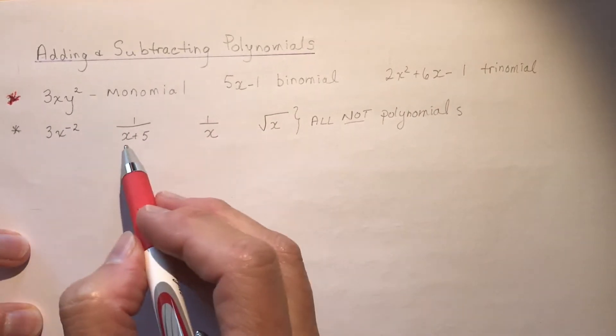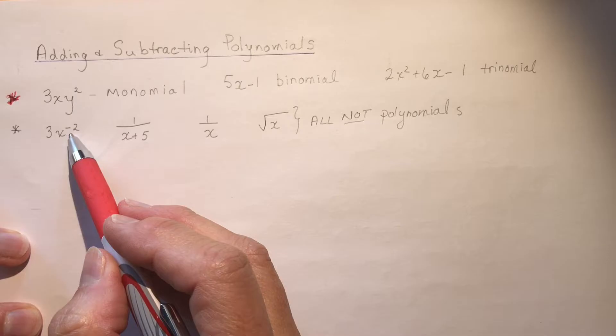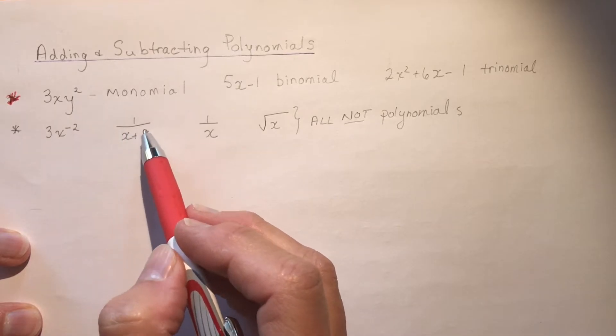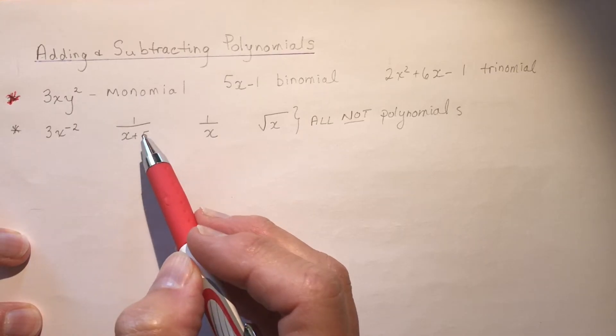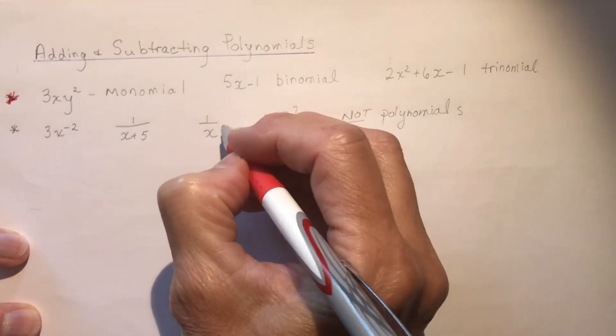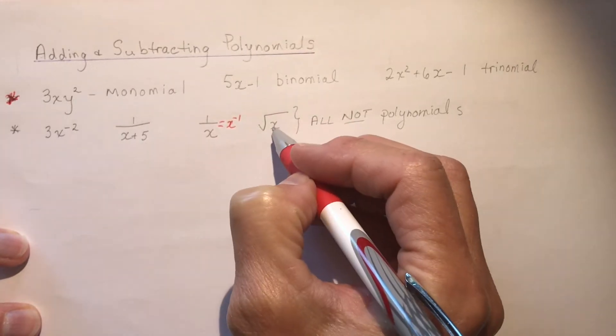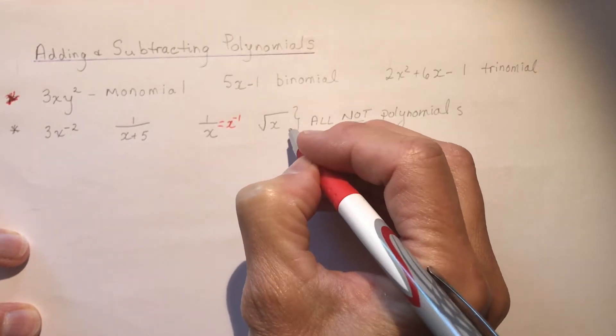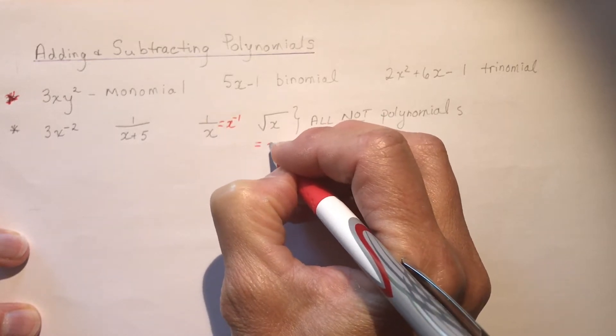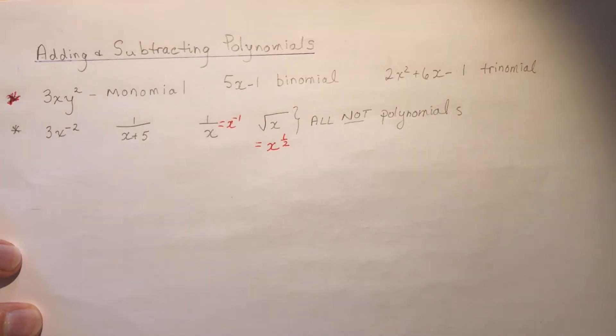Now these are examples that are not polynomials. When we have a negative exponent, if this is in the denominator, it could be written as x plus five to the negative one. One over x is the same thing as x to the negative one, so that's not a polynomial. And the radical equation is not a polynomial because it has a fractional exponent, root of x is equal to x to the one half power.